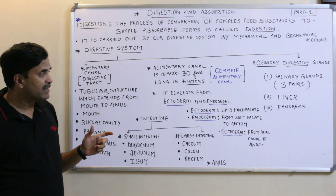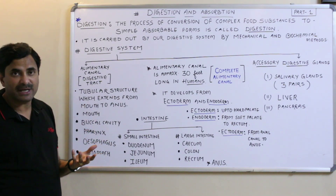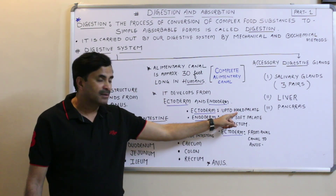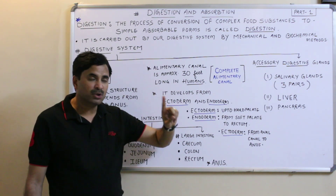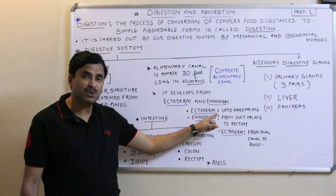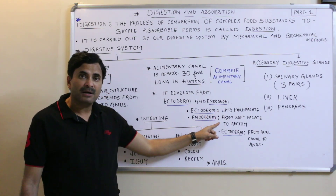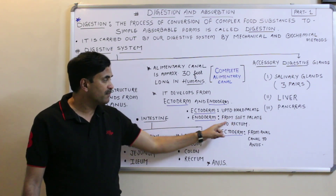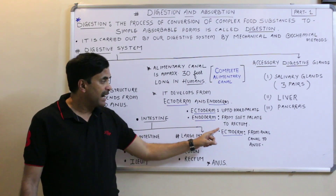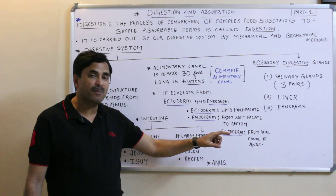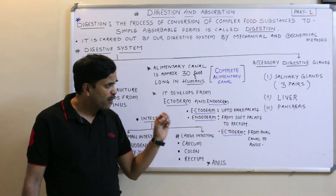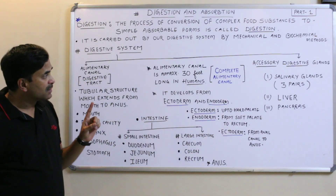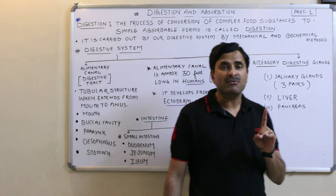Which part of the alimentary canal arises from which embryonic layer? From the mouth up to the hard palate, it develops from the ectoderm. The part from the soft palate up to the rectum originates from the endoderm. The last part, from the anal canal to the anus, develops from the ectoderm.